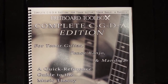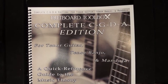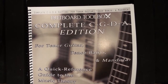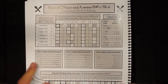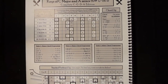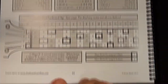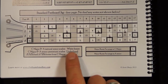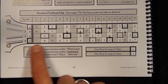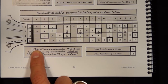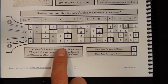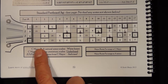To visualize all these scales we're going to look at a Fretboard Toolbox Complete CGDA edition and turn to page 19, which is the key of C major page. We're going to focus on the fretboard jig down at the bottom. The notes in white boxes are the notes of the C major scale — they're also the notes of the A natural minor scale, but today we're just going to worry about the C major scale.